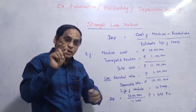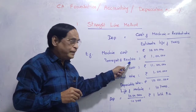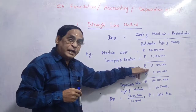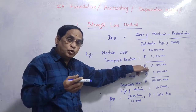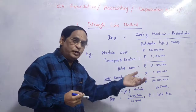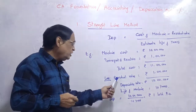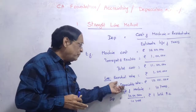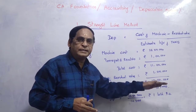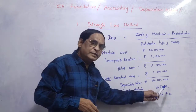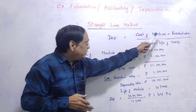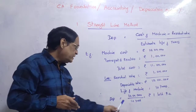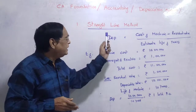Let's say the machine cost is 10 lakhs, and the installation cost at our factory is 1 lakh, making the total cost 11 lakhs. The residual value — the scrap value when the machine is disposed of — is 1 lakh. So the depreciable value is 11 lakhs minus 1 lakh, which equals 10 lakhs. Divided by the estimated life of 10 years, the depreciation is 1 lakh rupees per annum under the Straight Line Method.